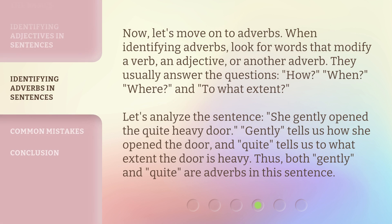Now, let's move on to adverbs. When identifying adverbs, look for words that modify a verb, an adjective, or another adverb. They usually answer the questions: how, when, where, and to what extent. For example, in 'She gently opened the quite heavy door,' 'gently' tells us how she opened the door, and 'quite' tells us to what extent the door is heavy. Thus, both 'gently' and 'quite' are adverbs in this sentence.